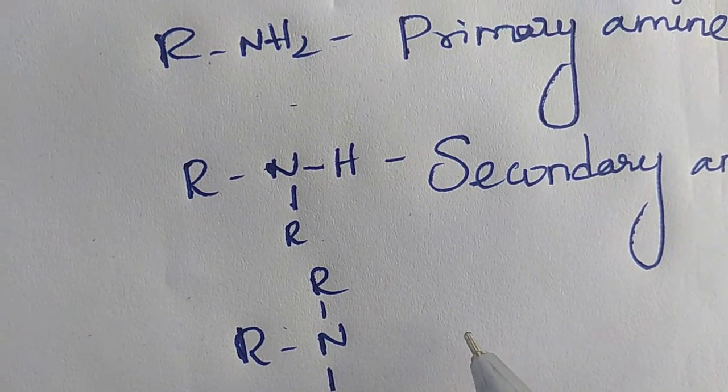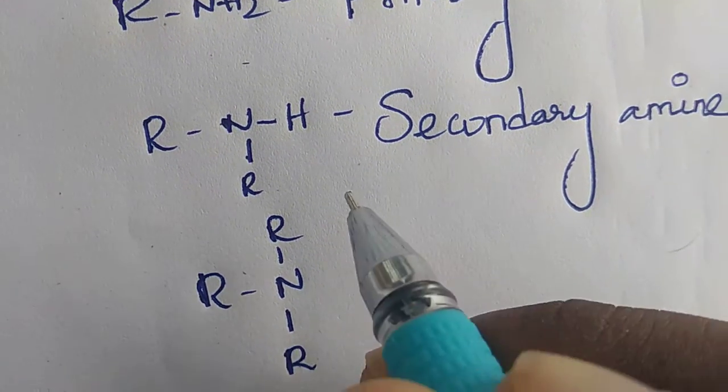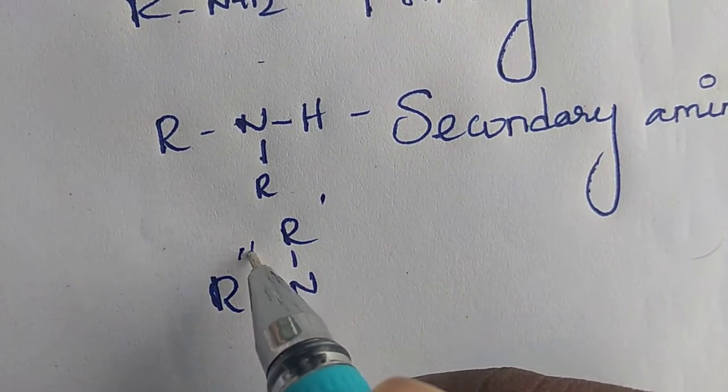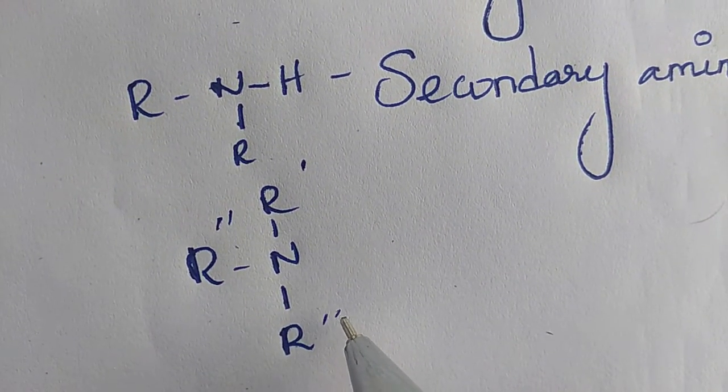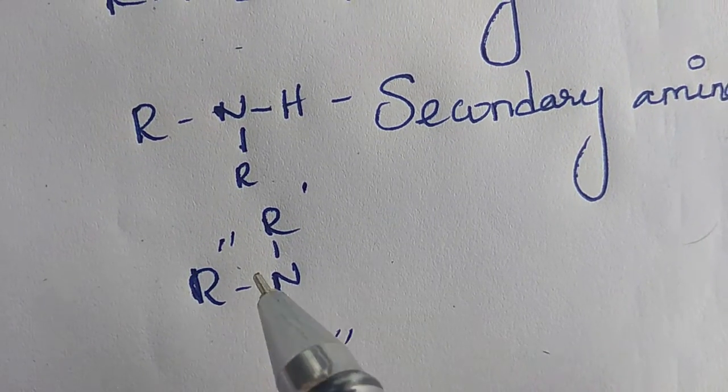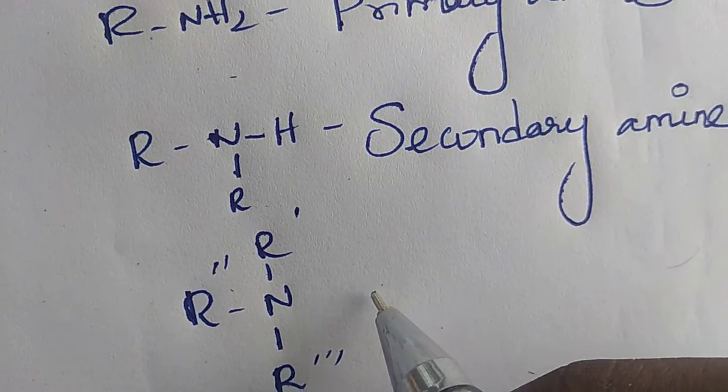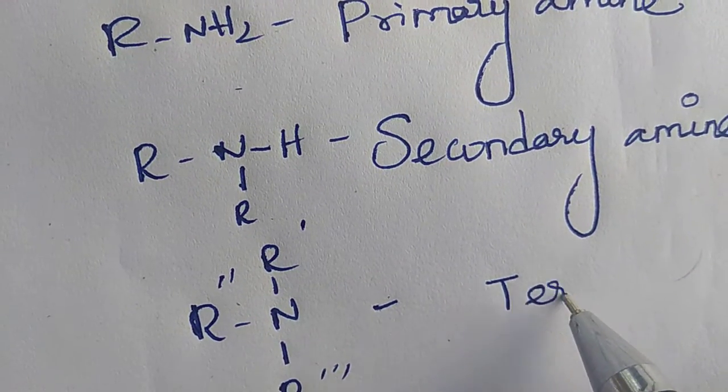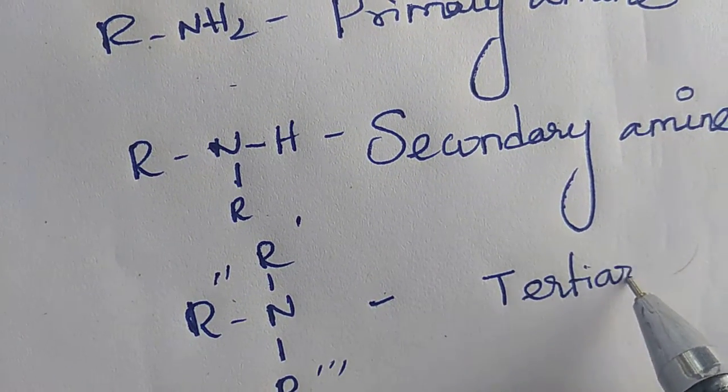This is the tertiary amine. Why is it known as tertiary amine? Because nitrogen is adjacent with no hydrogen atoms, so it is known as tertiary amine.